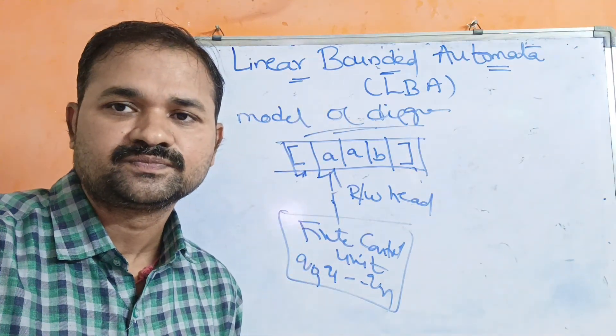The second component is the read/write head. With it, we can perform read or write operations and move the head either left or right, just like the Turing machine. However, there is one constraint: we cannot move the head beyond the left end marker, and we cannot move it beyond the right end marker. The head can move only within the bounded region between the two end markers.